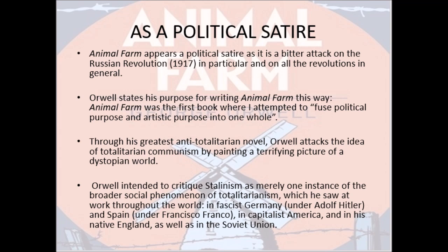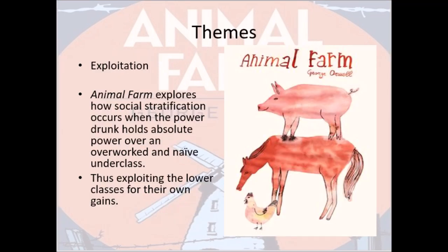Besides being a fable and allegory, Animal Farm also functions as political satire because there is a bitter attack on the Russian Revolution in particular, and on other revolutions in general — since a movement initiated on the basis of equality can itself turn dictatorial and totalitarian. Orwell states his purpose for writing Animal Farm was to fuse political purpose and artistic purpose into one whole. Through his greatest anti-totalitarian novel, Orwell attacks not just the communist regime but totalitarianism in every form and guise — whether fascist Germany, Spain, capitalist America, his native England, or the Soviet Union.